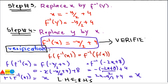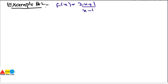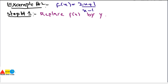This is how you can verify your result. Let's have one more example. Example 2: f(x) = (2x + 1)/(x - 1). Step number 1 is to replace f(x) by y, giving y = (2x + 1)/(x - 1).